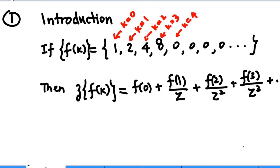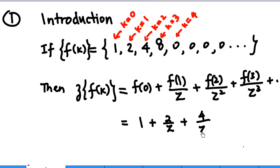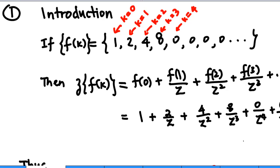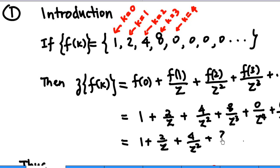In particular, for this example, we get 1 plus 2 over Z, plus 4 over Z squared, plus 8 over Z cubed, and then the rest terms are zero. So the Z-transform equals 1 plus 2 over Z, plus 4 over Z squared, plus 8 over Z cubed.